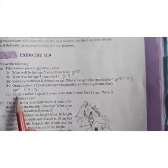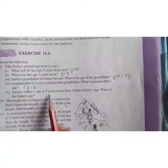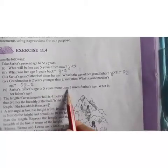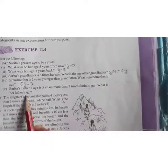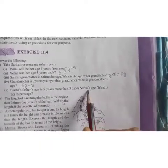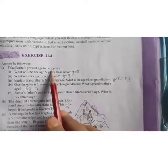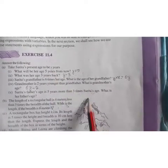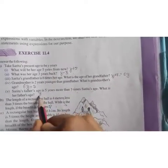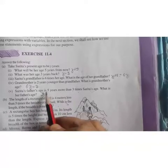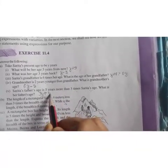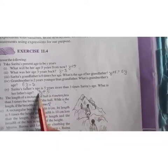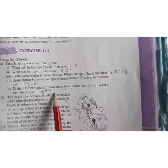Next one is Sarita's father age is 5 years more than 3 times Sarita's age. What is her father's age? So first find 3 times Sarita's age. Sarita's age is Y years. So 3 times Y is 3Y, and 5 years more. More means plus 5. So it will be 3Y plus 5.